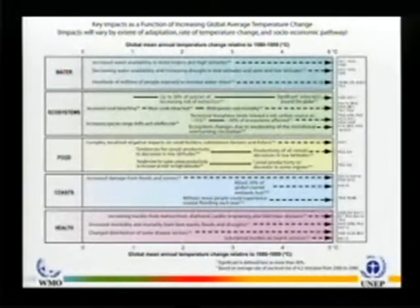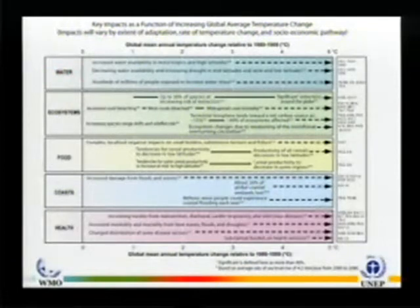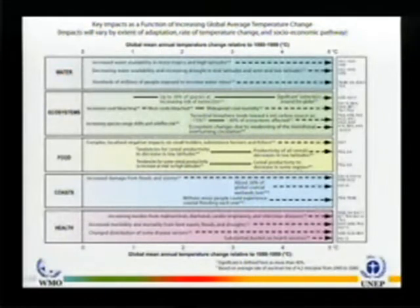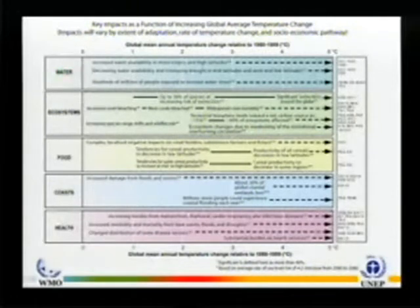For water: increased water availability in the moist tropics and high latitudes where it's already moist — we don't want more of it. And unfortunately, decreasing water availability and droughts in the semi-arid low latitudes. It's exactly what we don't want. It makes the world much less even, more inequitable.